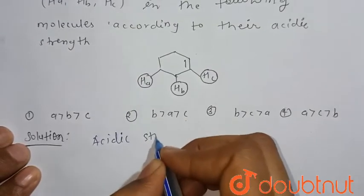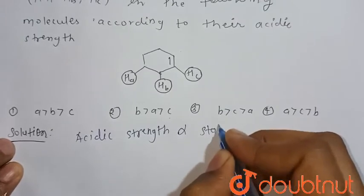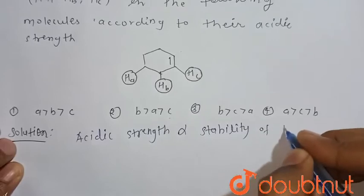So we know that acidic strength is directly proportional to the stability of its conjugate base, or stability of its corresponding anion form after removal of the H+.